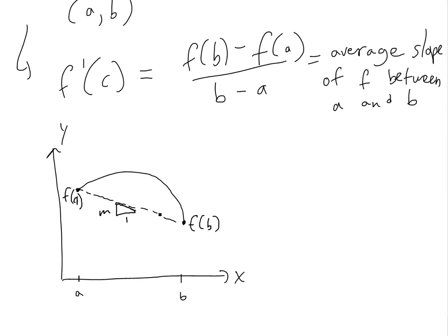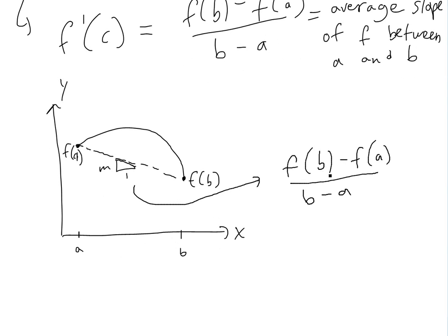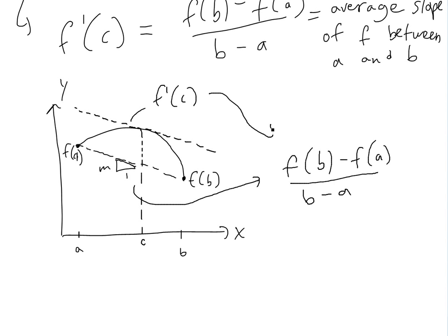So all it's saying is that this slope, which is just f of b minus f of a divided by b minus a, is just the slope of this line here. And all it's saying is that you'll have a point c somewhere around here — this is c — where it has the exact same slope as the total average slope between the interval. And this would be f prime of c, which equals the same thing.